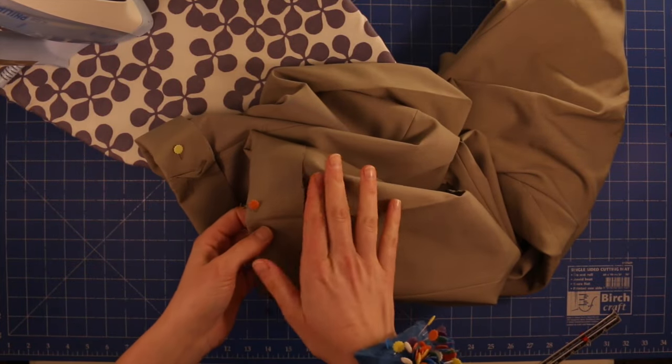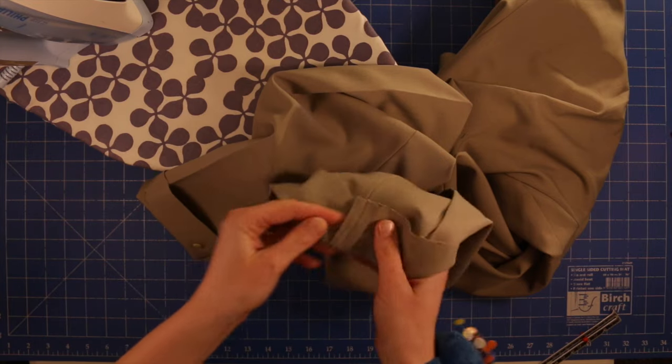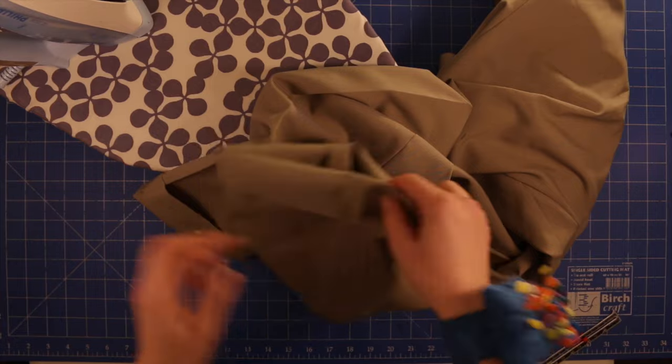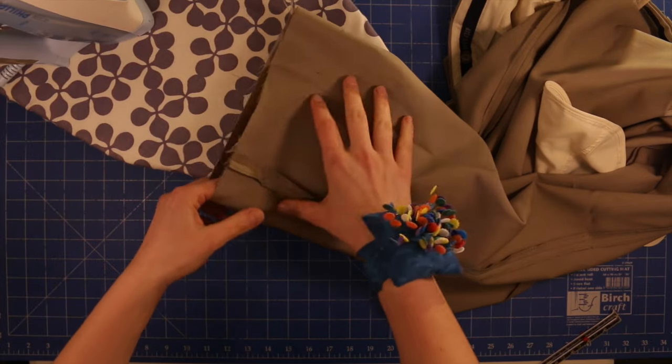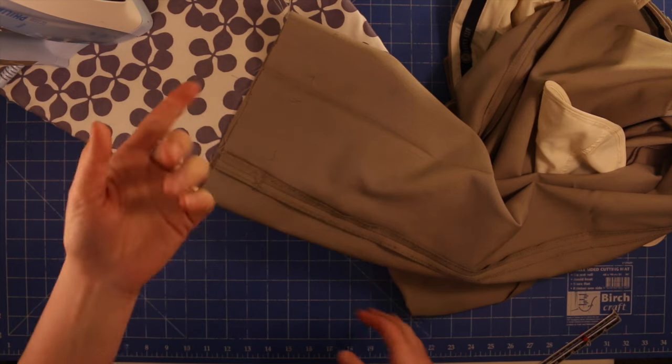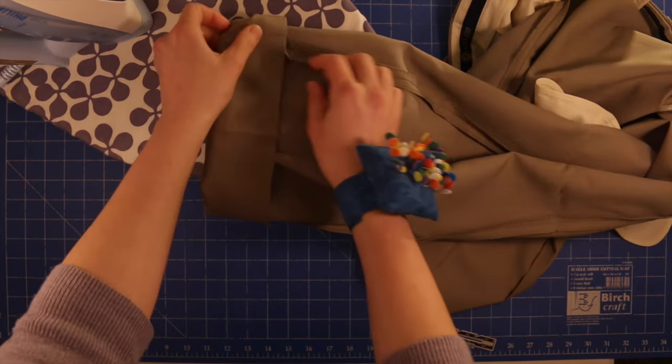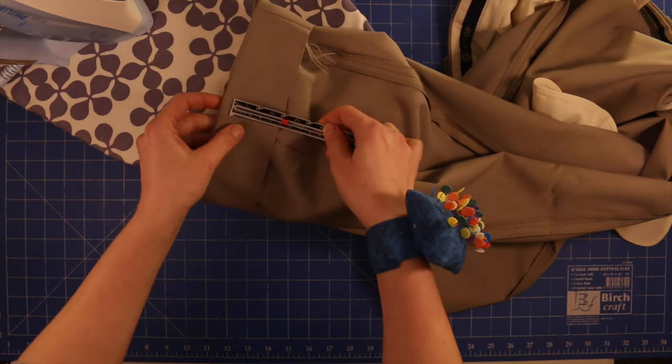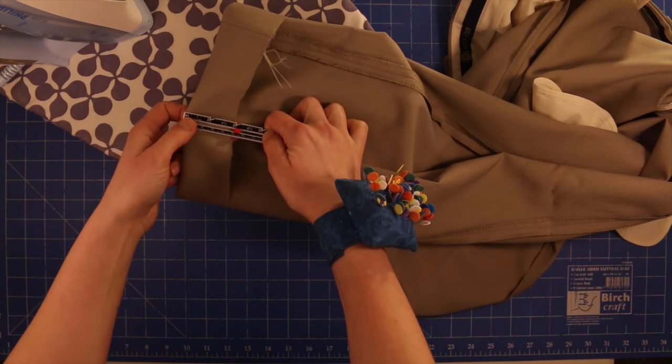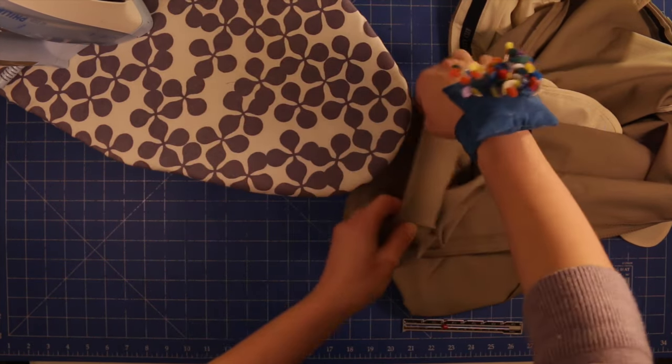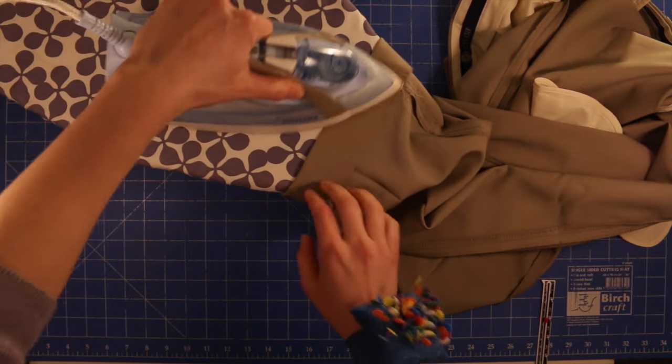I've trimmed off the excess fabric on both pant legs. Now I'm going to remove the pins and turn the pants inside out and then we're going to do some ironing. I've got the pant legs inside out, so now I'm going to fold them back up at the two inch mark. I'm going to give that a press with the iron and do that all the way around for both of the pant legs.